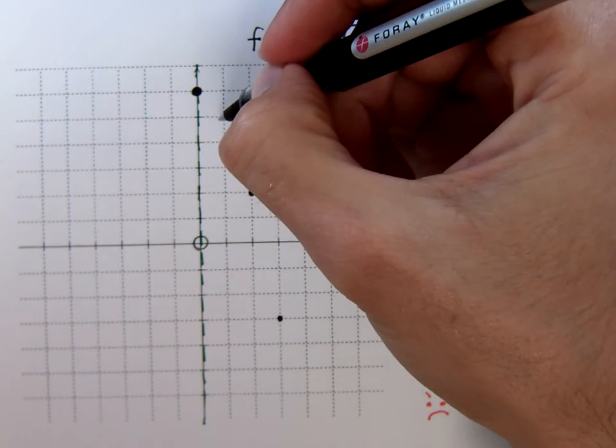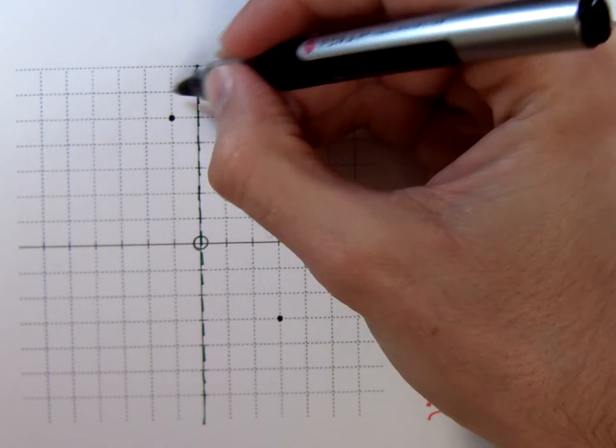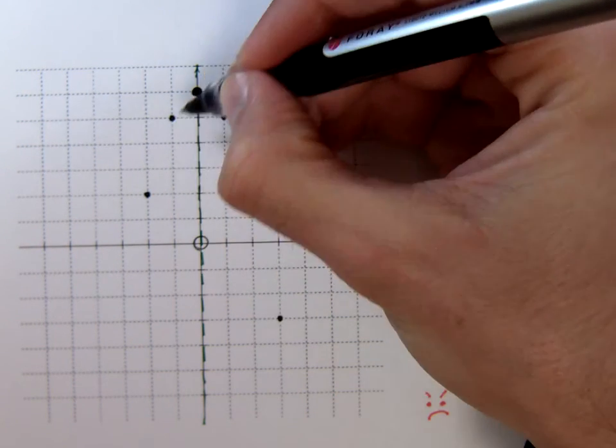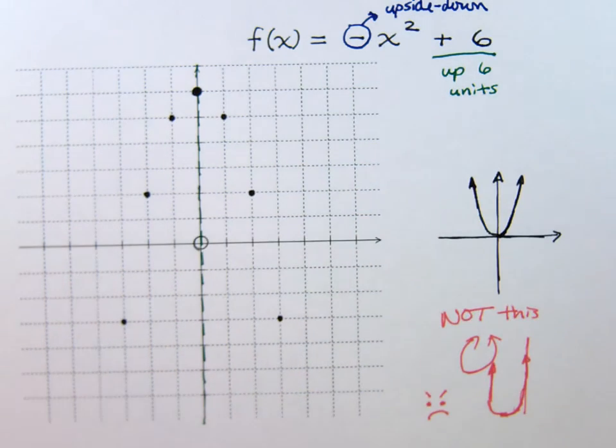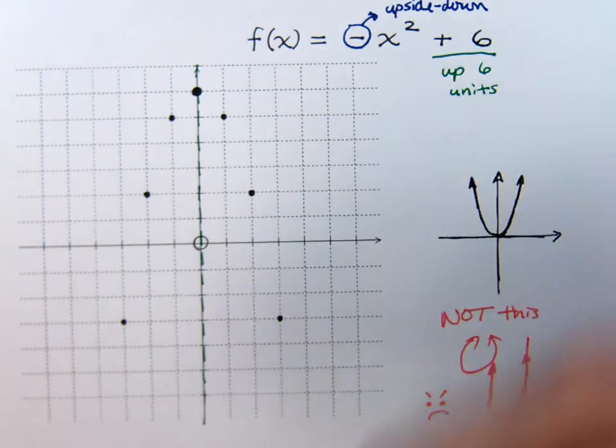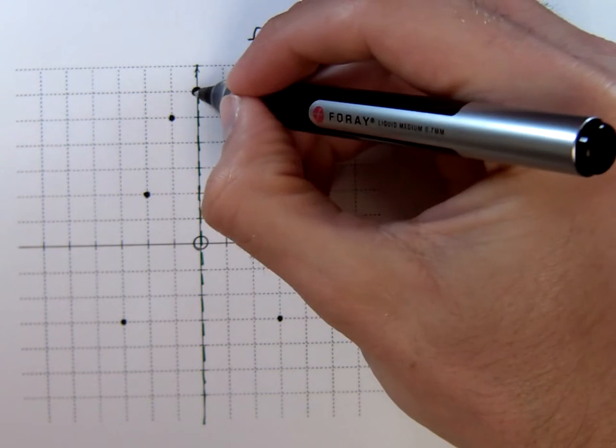Now I've got to look on the other side of this. Just mirror these points over. 1 squared is 1. 2 squared is 4. 3 squared is the 9. So we have nice, clear points, and we just need to sketch our graph here.